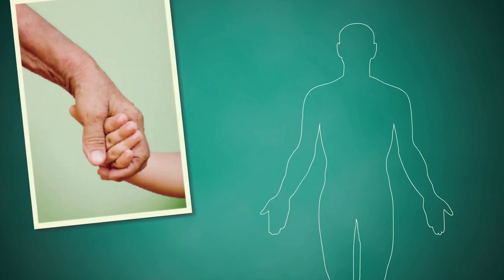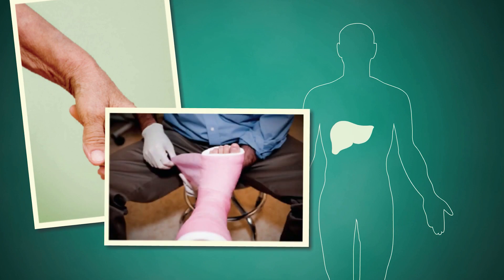But regeneration in humans is limited. Young children can grow new fingertips, and our livers are pretty good at growing back. Yet, for the most part, our stem cells just heal injuries. They don't replace missing pieces.